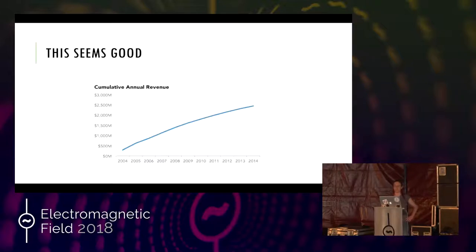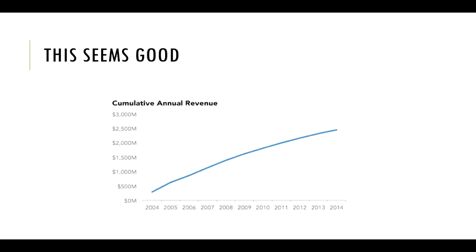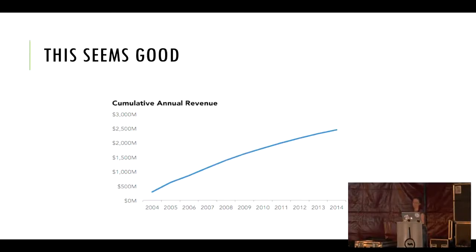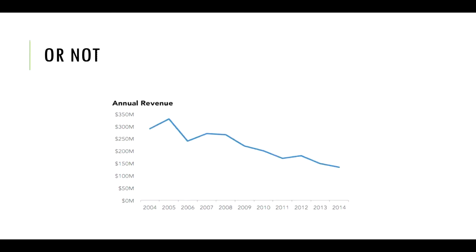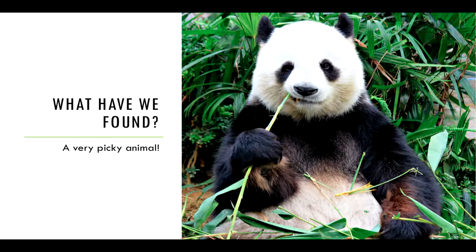Here is a useful trick if you want to tell your boss you're doing well when you're not actually doing that well. This is cumulative annual revenue, which means you take one year and then you add the next year's revenue on top of it and just keep adding up — so it will always go up. As you can probably see there is a little bit of a curve at the bottom, and perhaps you can see what is coming next if I show you the actual annual revenue. It ain't so pretty. This is basically a good trick because you're picking your data — you're deciding what you want to show and choosing accordingly. The most picky animal I can think of is the panda, who lives solely on bamboo.